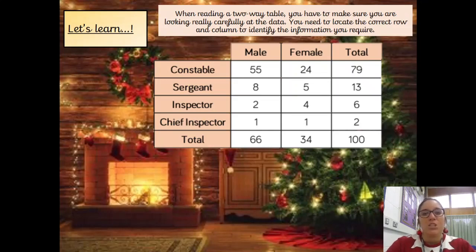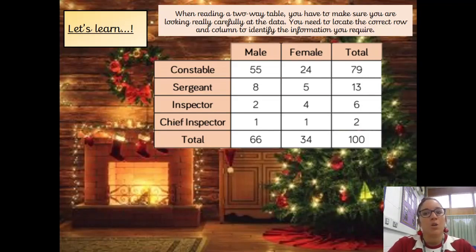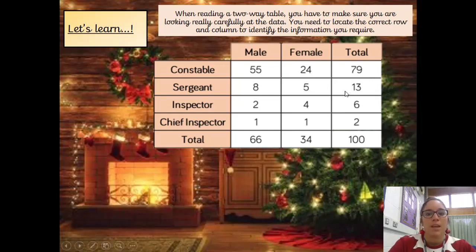When reading a two-way table, you have to look really carefully at the data. You need to locate the correct row and column to identify the information you require. As a quick reminder, the columns are the ones that go down, and the rows are the ones that go across.